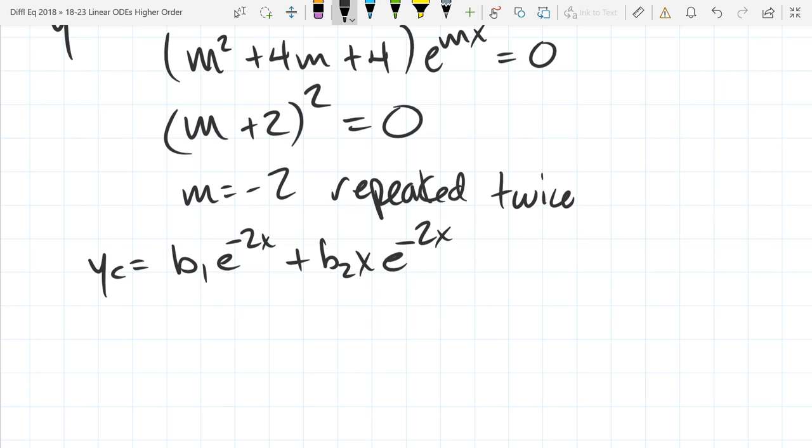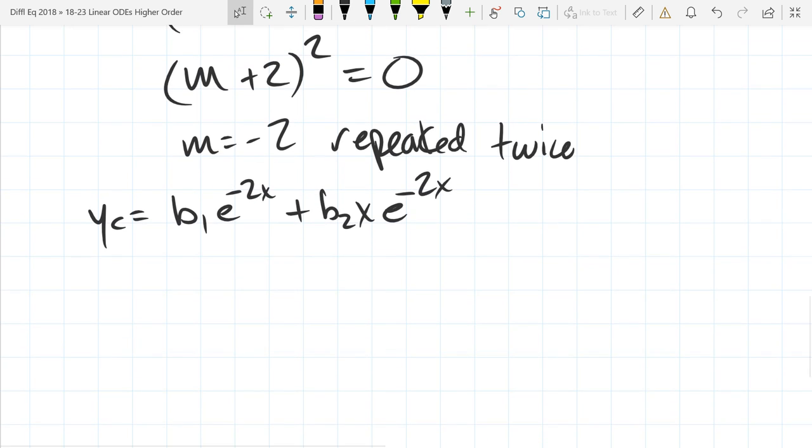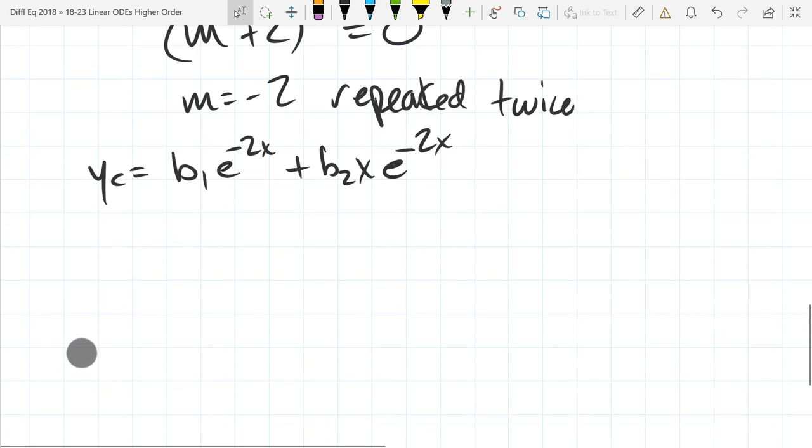If this repeated three times, I would have, don't write this down, but I would have V3, X squared, E negative 2X. That would be if it repeated three times. So, this should be in your notes and it should also be on your cheat sheet. What to do when you have repeated roots? There were three cases last section. They should all be in your notes and they should be on your cheat sheet soon.